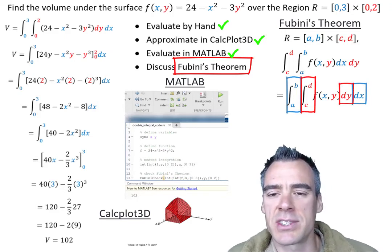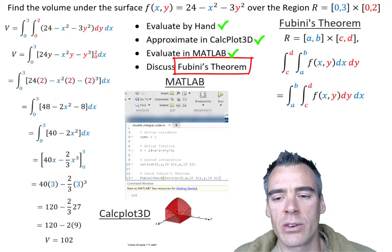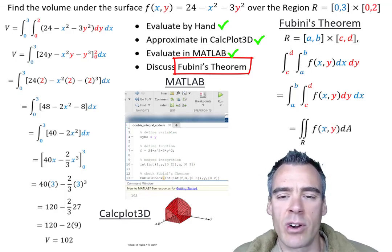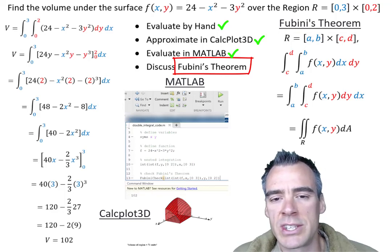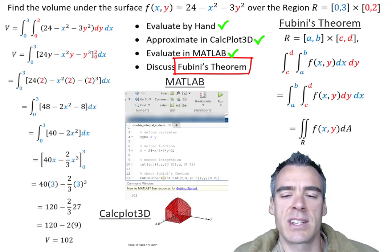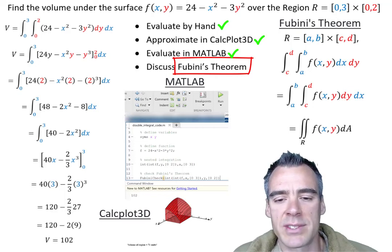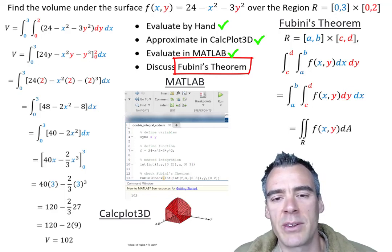And generally we can just say this is equal to our integral of F with respect to dA, and we're going to integrate that over our double integral over the general region R. So basically it just says we can freely switch our order of integration as long as we keep our bounds consistent and as long as those bounds are just numbers.